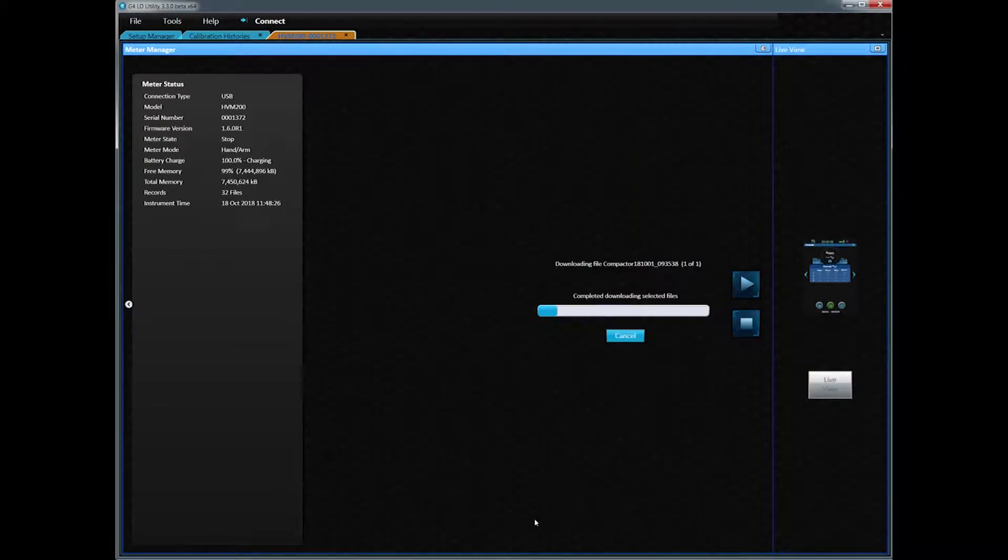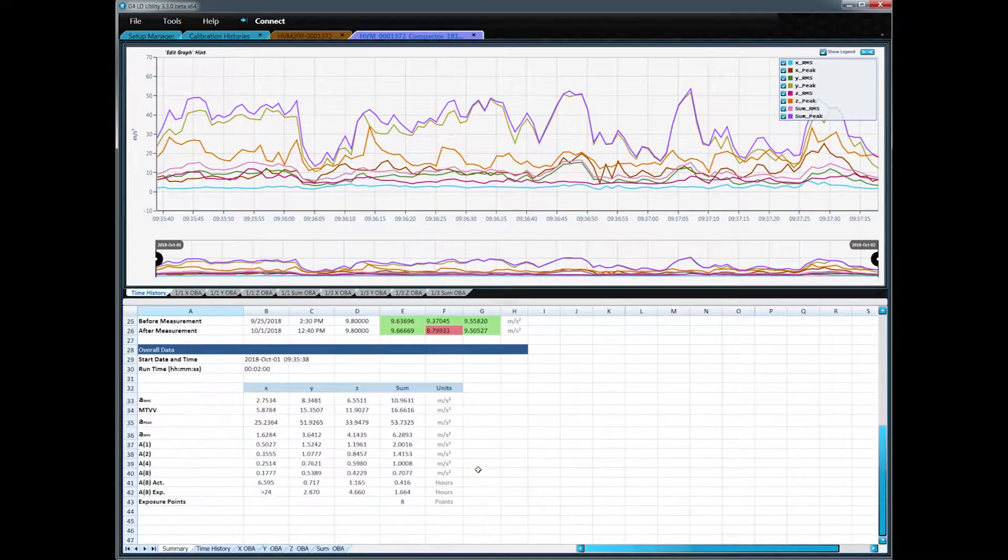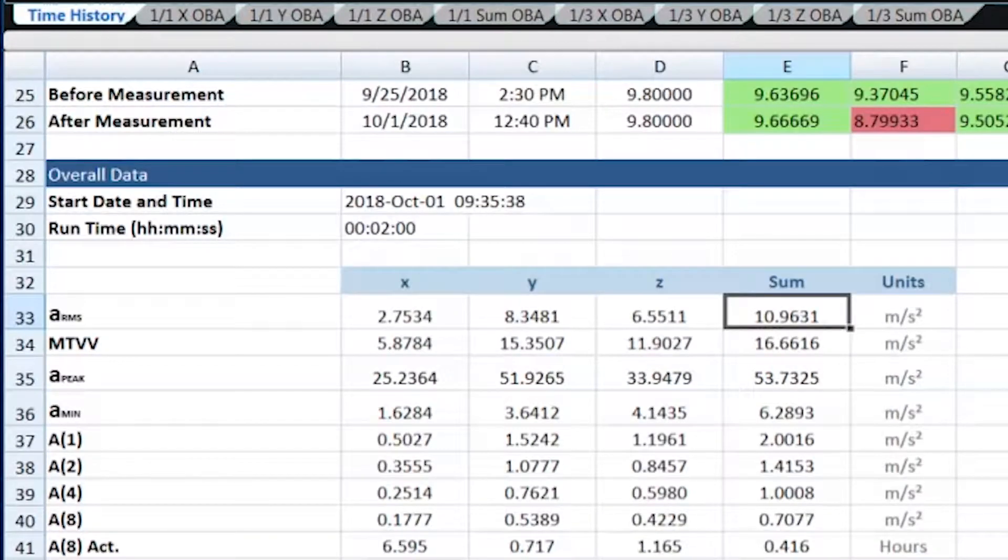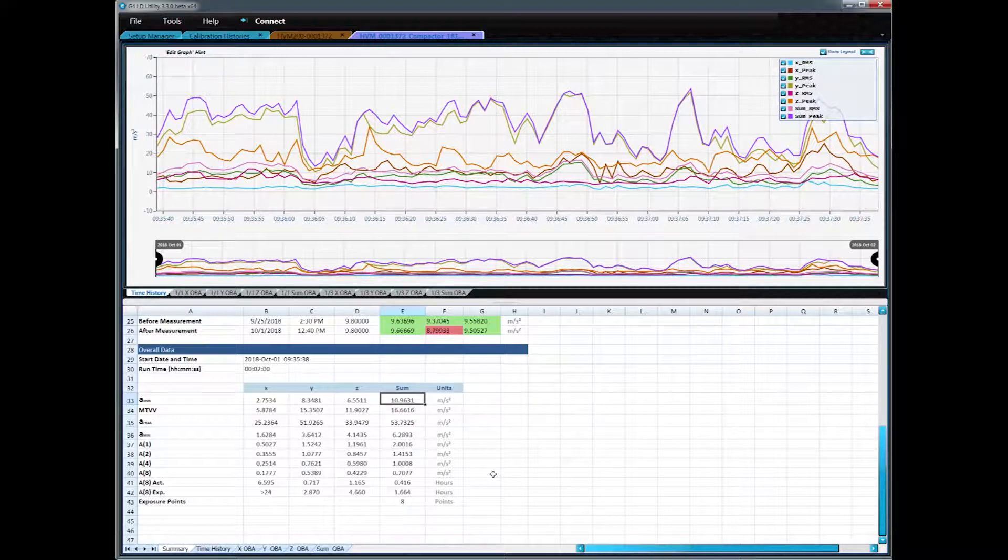We were told that the time on the compactor is around two hours per working day. So the ARMS level is 10.9631 meters per second squared. That is very high, but expected for this type of machine.